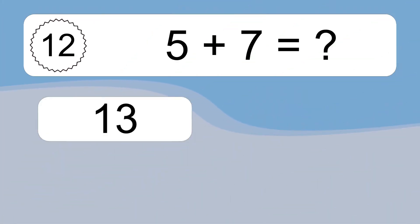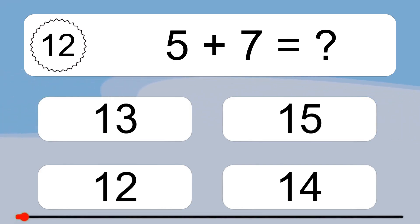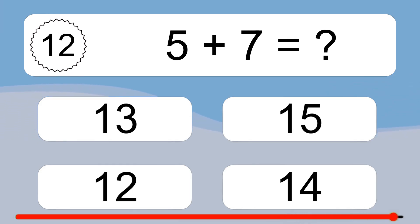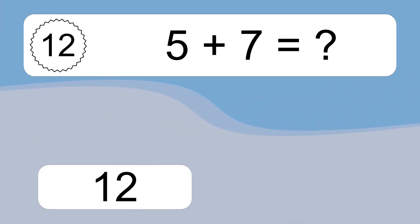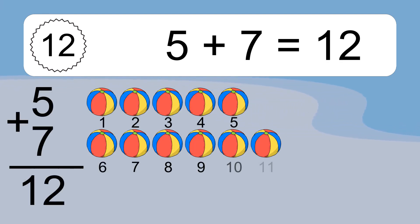5 plus 7 equals what? 5 plus 7 equals 12.